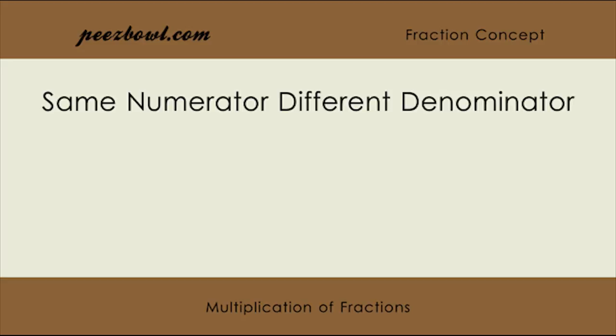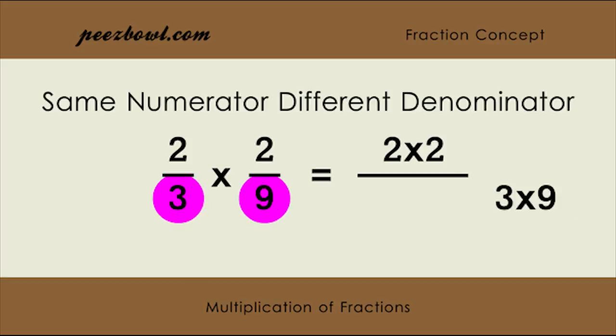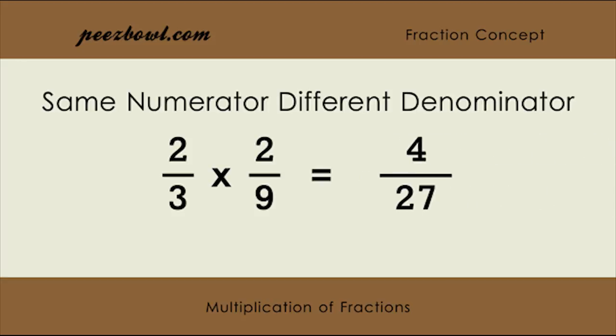In this example, we are multiplying 2/3 and 2/9. As per the rule, the numerator of this multiplication will be 2 multiplied by 2, and the denominator will be 3 multiplied by 9, as shown here. Hence, the result of this multiplication will be 4/27.